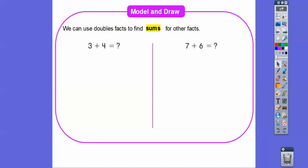So we can use double facts to find the sums for other factors. Can you see that this four is close to this three right here? So we can represent four as three plus one, and here we can use our doubles facts.